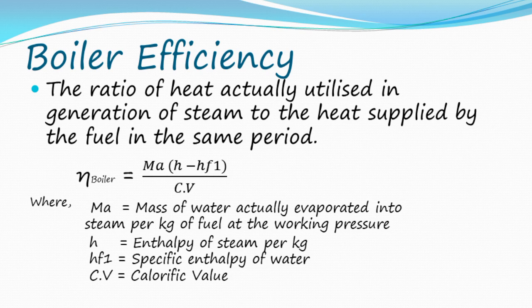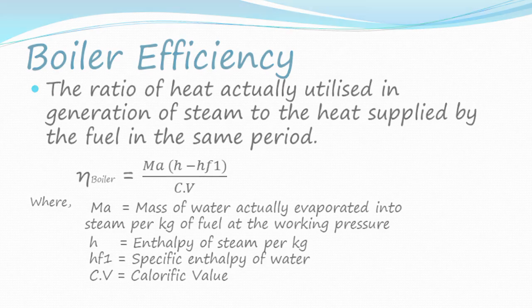Boiler efficiency is the ratio of heat actually utilized in generation of steam to the heat supplied by the fuel in the same period. Where Y equals mass of water actually evaporated into steam per kilogram of fuel at working pressure, H equals enthalpy of steam per kilogram, HF1 equals specific enthalpy of water, and C.V equals calorific value.